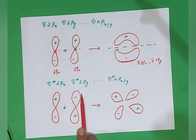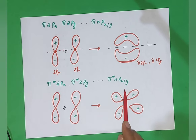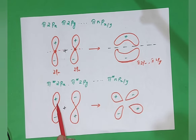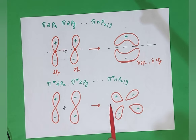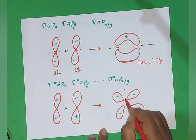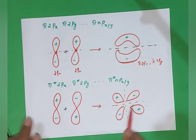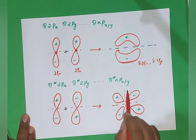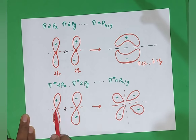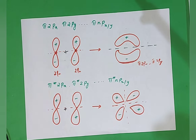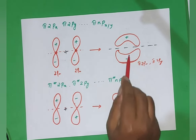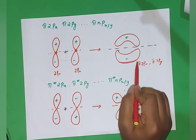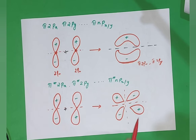For pi star 2px or pi star 2py, generally pi star npx or y, the overlap is destructive — plus and minus overlapping, minus and plus overlapping. There is already one nodal plane existing from the p orbital itself, and a second nodal plane is formed by this destructive combination. So the number of nodal planes for pi npx or y is one, and for pi star npx or y the number of nodal planes is two.